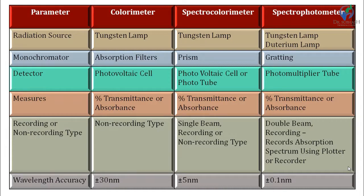Colorimeter is a basic and simple instrument. Spectrophotometer is more advanced than colorimeter, and spectrophotometers are the most advanced instruments used for visible determination (colorimetry) as well as UV determination. Most spectrophotometers are UV-visible spectrophotometers, meaning they work in the range of UV as well as visible wavelength.